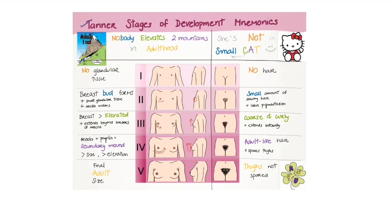Tanner stages of breast development — mnemonic 'nobody elevates two mountains in adulthood': stage 1 no glandular tissue, stage 2 breast bud, stage 3 breast bud elevated, stage 4 secondary mound, stage 5 adult size. Pubic hair mnemonic 'not a small cat': stage 1 no hair, stage 2 small amount, stage 3 coarse and curly, stage 5 adult-like, stage 6 involvement of thighs.